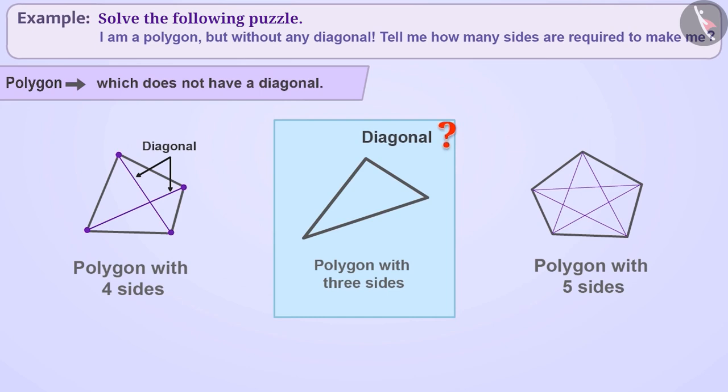Think a little. Absolutely correct. This has no diagonal. Hence, this is the polygon represented in the puzzle. Since this is made of three sides, the answer to the puzzle is three.